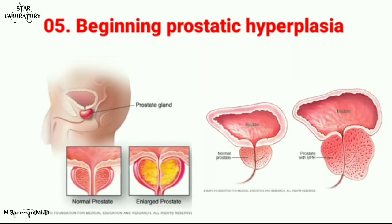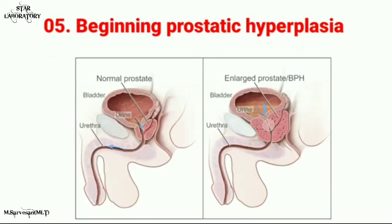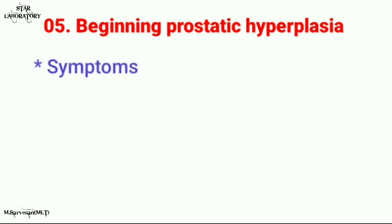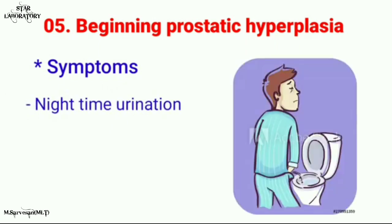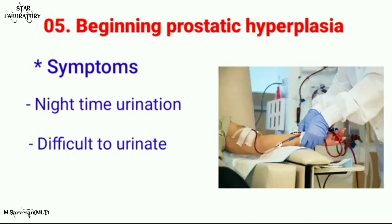The final disease is benign prostatic hyperplasia, which is very common in males over 50 years of age. Due to aging, the prostate gland can become swollen or enlarged beyond its normal size, blocking the urethra and preventing urine excretion, causing great difficulty in passing urine. The main symptoms are passing more urine during the night and difficulty urinating with only small amounts. This disease condition can be detected by ultrasonography or physical examination, and can be cured with successful treatment.